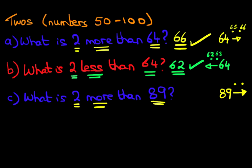So now we are ready to count forwards from number 89 — 89, 90, 91. That is our answer: 91.